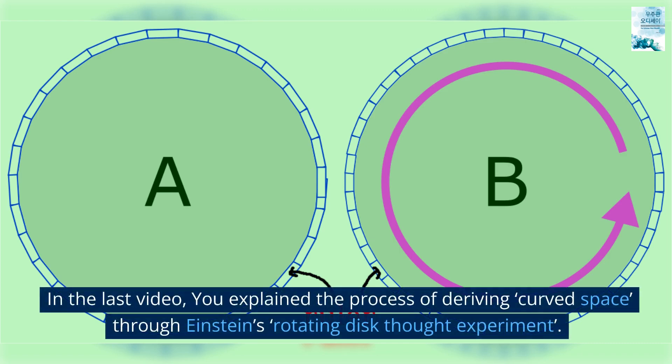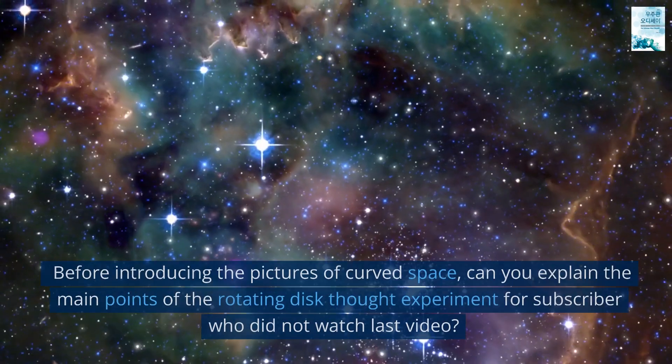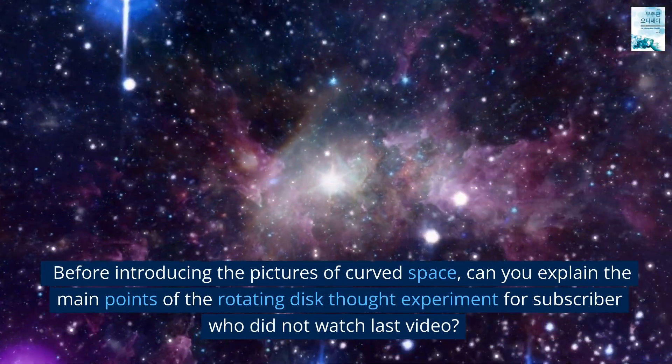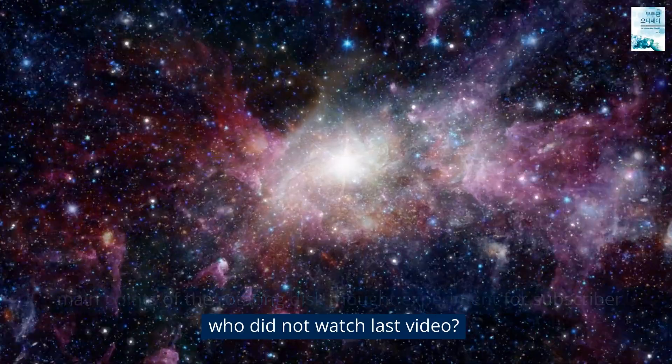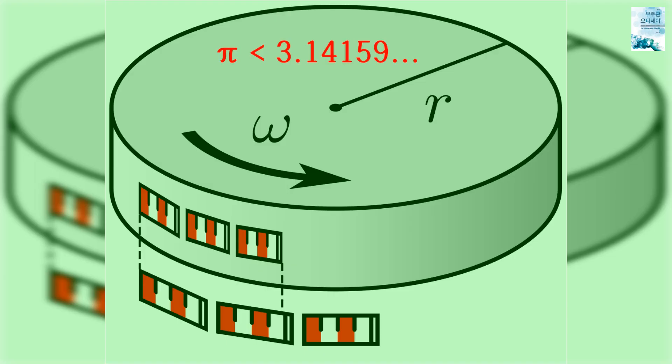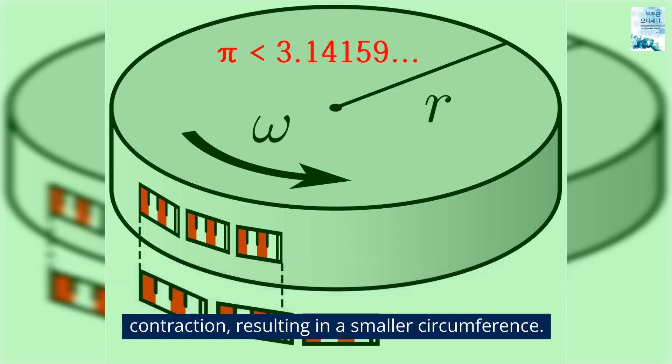In the last video, you explained the process of deriving curved space through Einstein's rotating disk thought experiment. Before introducing the pictures of curved space, can you explain the main points of the rotating disk thought experiment for subscribers who did not watch last video? That would be nice. This was inspired by Ehrenfest's paradox, which states that the circumference of a rotating disk decreases due to Lorentzian contraction, resulting in a smaller circumference.